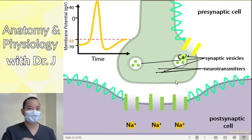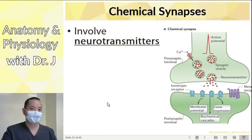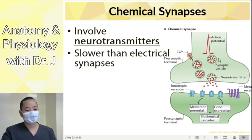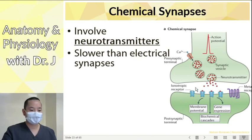In the electrical synapse, there's a physical link via gap junctions, but in the chemical synapse there are no gap junctions — instead neurotransmitters are released. Chemical synapses involve neurotransmitters; we didn't see neurotransmitters in the electrical synapse. Chemical synapses are slower because of all the steps involved: calcium channels opening, vesicles moving to the synaptic cleft, release of neurotransmitters, neurotransmitters binding to membrane ion channel receptors, and sodium flowing into the postsynaptic cell. Many steps — therefore it's a slower process.